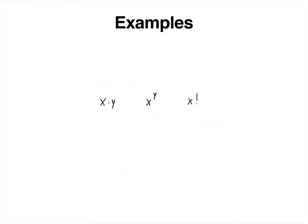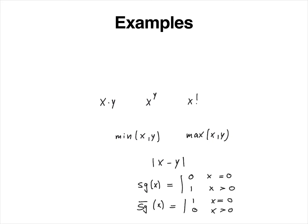You should now show that multiplication, factorial, min, and max are primitive recursive — once you have addition, you can iterate it to get multiplication, and factorial directly calls for a recursive definition. You can also use cutoff subtraction to get expressions for min and max, for the absolute value |x − y|, and to show that the sign function and its inverse are primitive recursive.